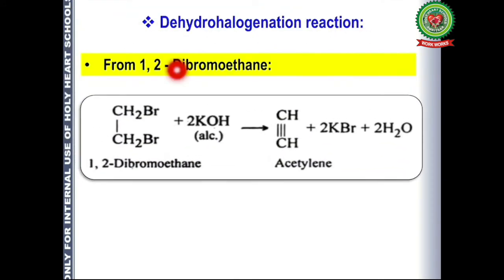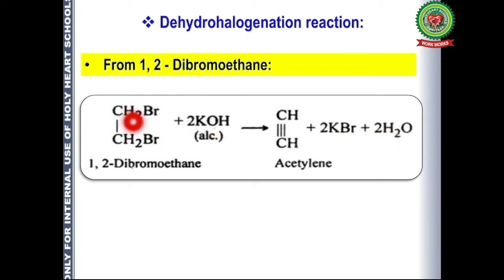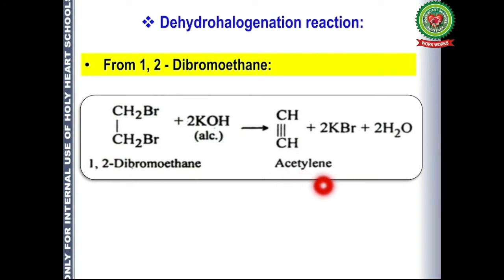The next reaction is dehydrohalogenation — removal of hydrogen as well as halogen from a reactant. We use 1,2-dibromoethane, where bromine is at the first and second positions, and react it with alcoholic potassium hydroxide. Since there are 2 bromines in the reactant, 2 KOH molecules are used, forming two molecules of KBr and two molecules of water. From each carbon, one hydrogen combines with OH to form water, and what is left behind is acetylene — acetylene being the common name of ethyne.